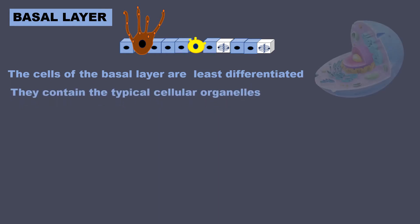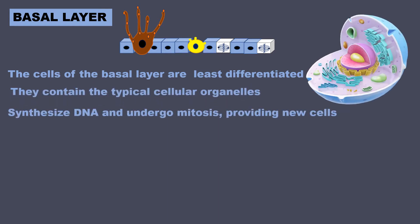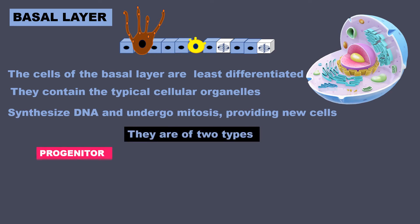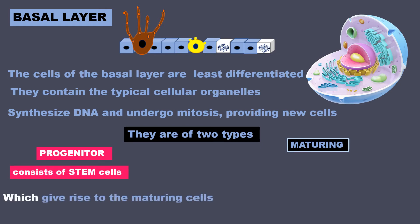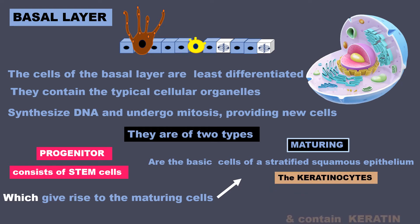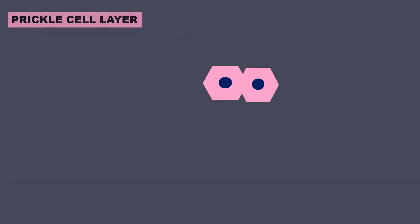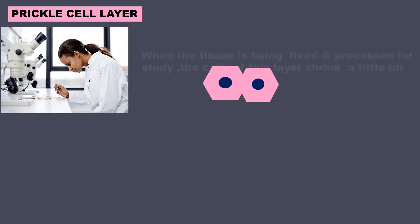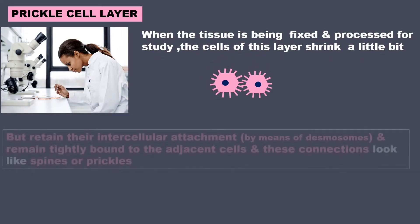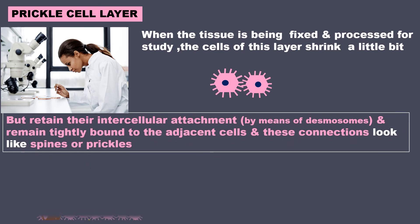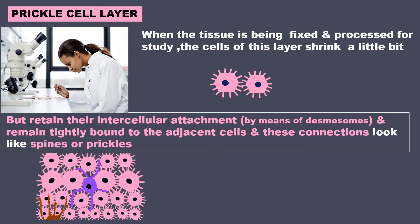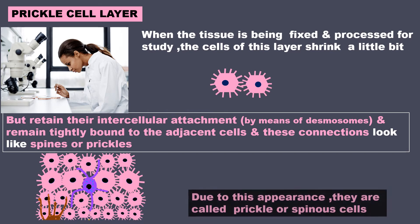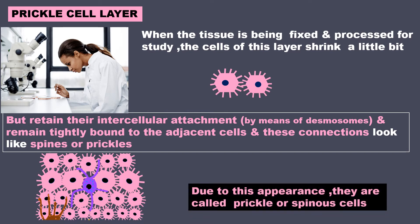The cells of the basal layer are the least differentiated; they contain typical cellular organelles, synthesize DNA, and undergo mitosis to provide new cells. They are of two types: progenitor and maturing. Progenitor cells consist of stem cells that give rise to maturing cells. Maturing cells are the basic cells of stratified squamous epithelium — the keratinocytes — and contain keratin. The next cell layer is the prickle cell layer. When tissue is fixed and processed for study, these cells shrink slightly, but they retain their intercellular attachments via desmosomes, remaining tightly bound to adjacent cells. These connections look like spines or prickles, and so they are called prickle or spinous cells.